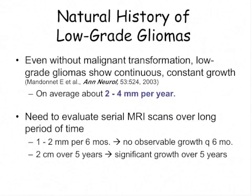Even without malignant transformation, studies have shown that low-grade gliomas do show continuous constant growth. On average, that growth is calculated at about two to four millimeters a year. When following patients with serial MRI scans, one thing to keep in mind is that if you take scans at short intervals, you may not see any observable growth from one scan to another — for instance, at six-month intervals. But looking over a longer interval, the cumulative growth is more apparent, and the majority of these tumors do grow, some significantly over a longer period of time.